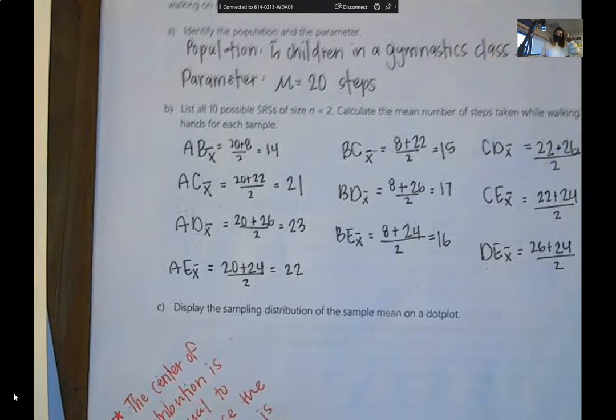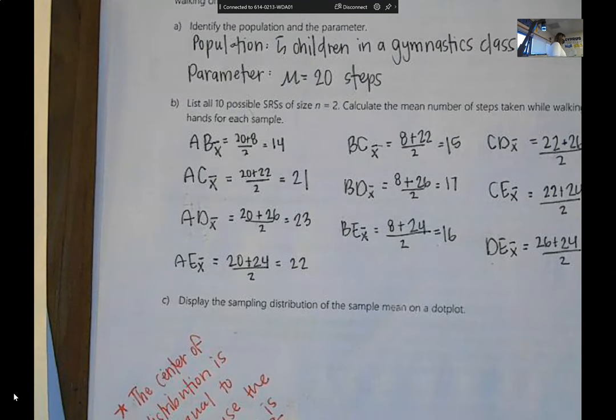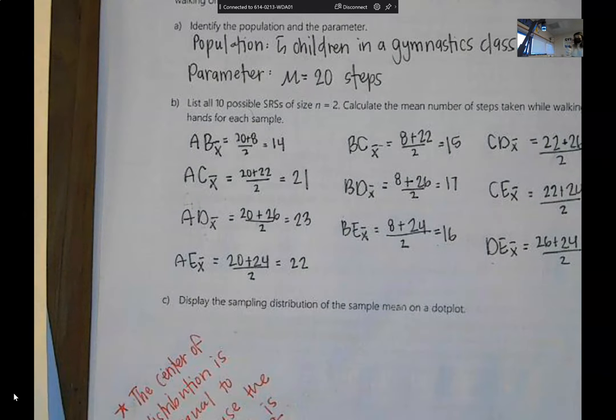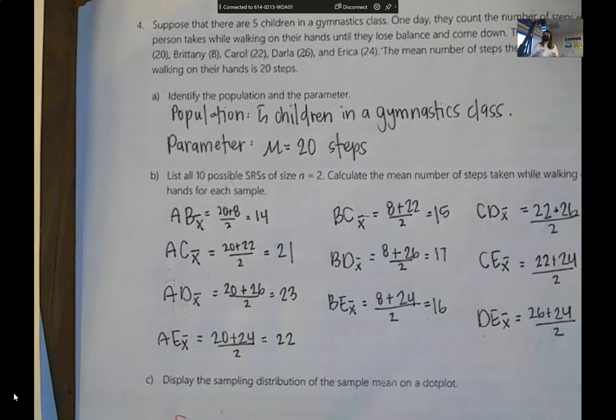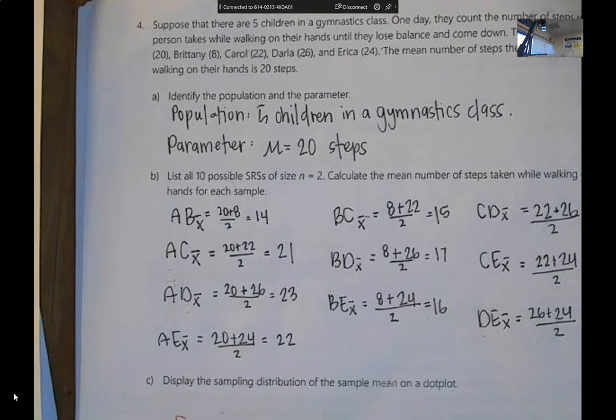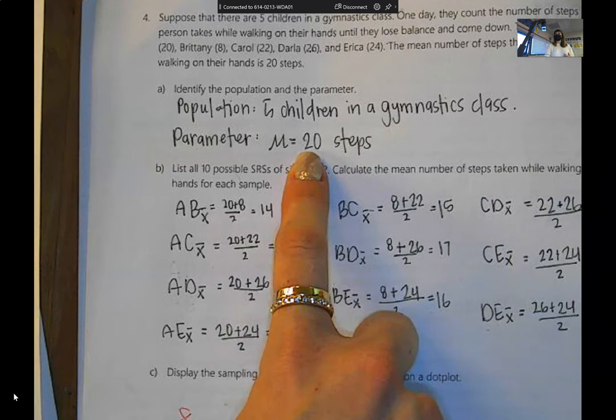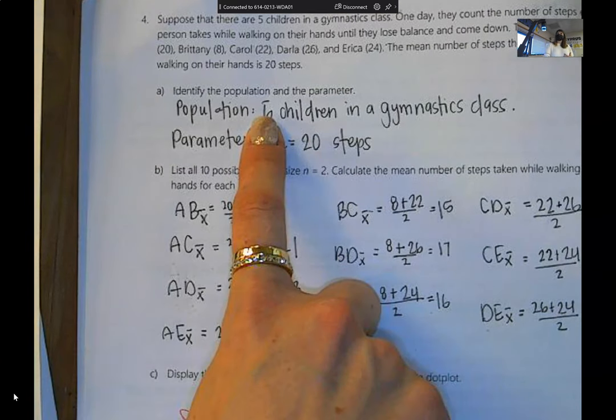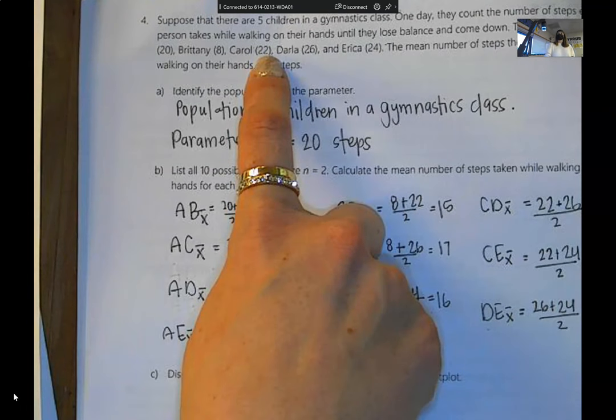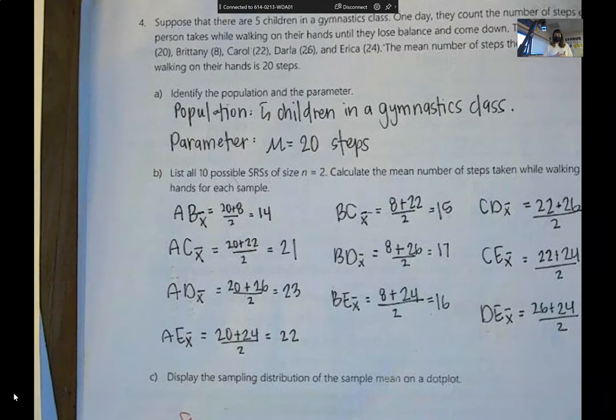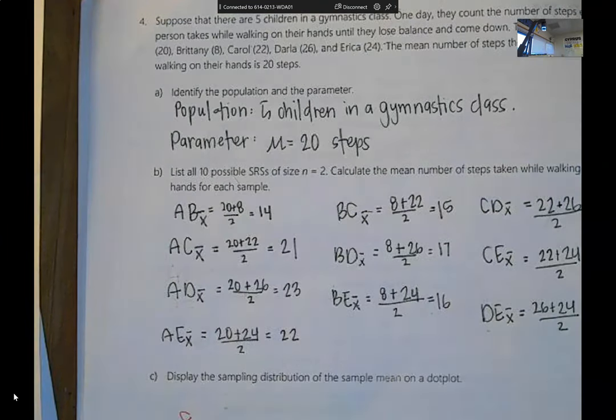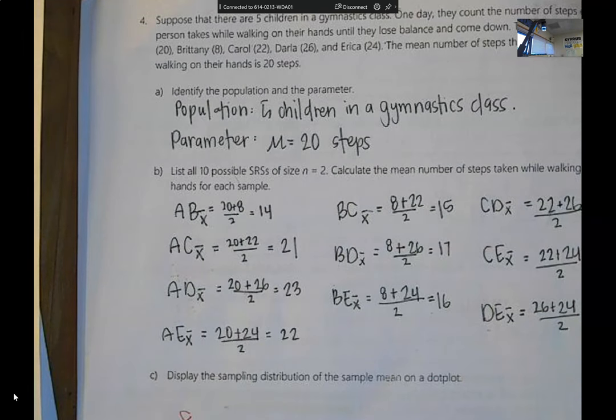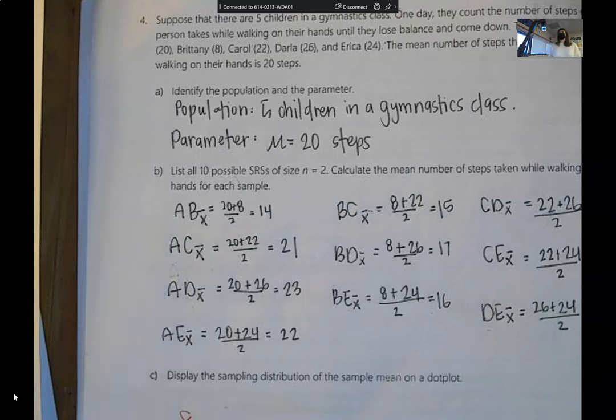So let's go through the last page and that will lead us into proportions. We have five kids in a gymnastics class and we want to know how far they can walk on their hands. The population is the five kids. The parameter, the true mu, is the actual values that their coach or instructor took.